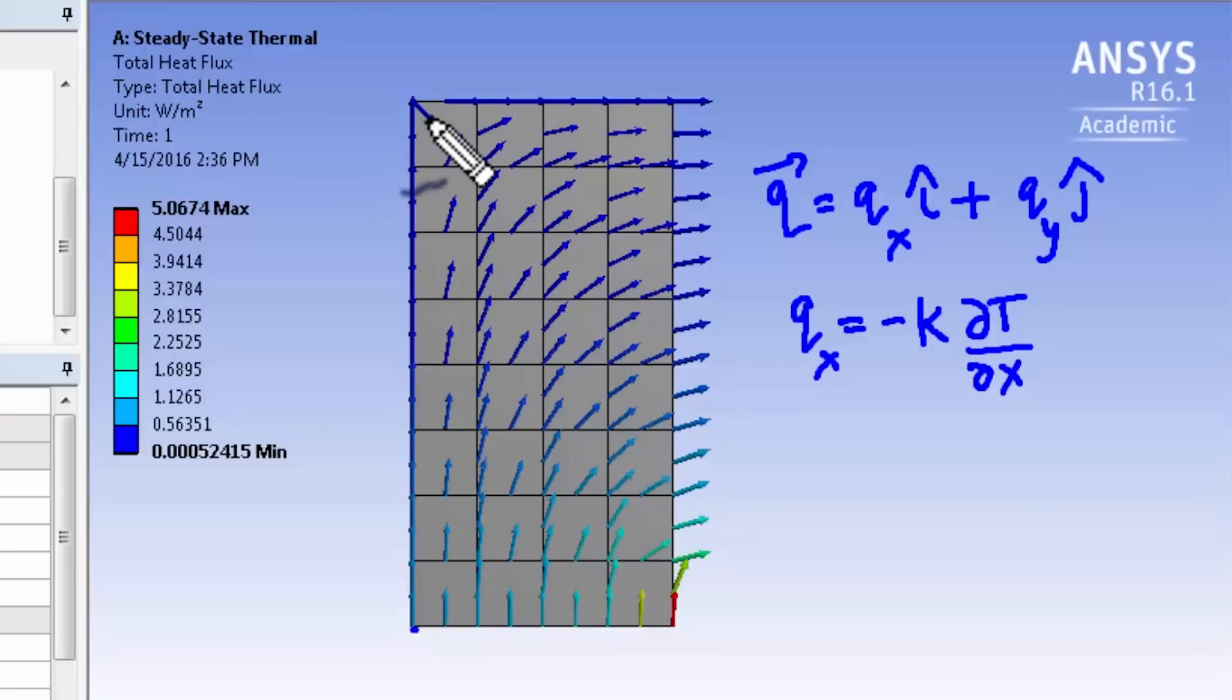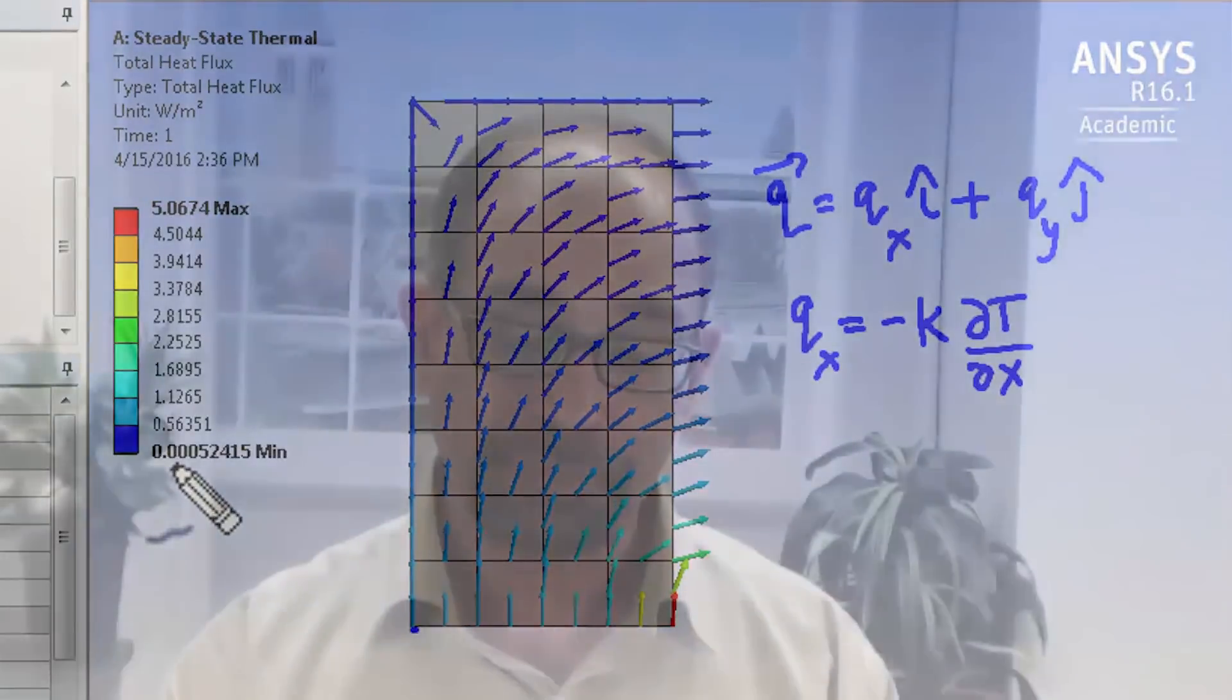You can see that the heat flow is flowing out to the fluid over here. Though the heat flux is supposed to be zero at these boundaries, it's actually a very small value. As we saw, the natural boundary condition is satisfied only approximately whereas the essential boundary condition is satisfied exactly, and we see the effect of that there. You can save the project.